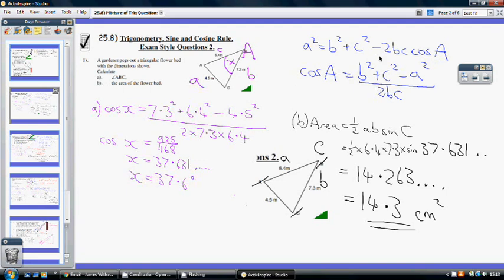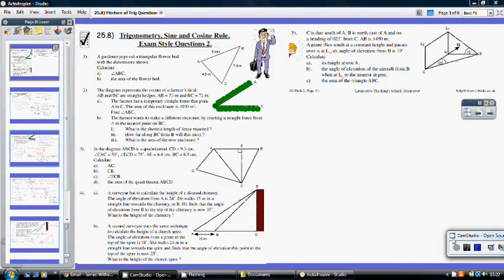So what have we done? We've added 2BC cos A to both sides, we've taken away A squared from both sides, and then we've divided by 2BC. So, OK, so I'm just about to go over question two.